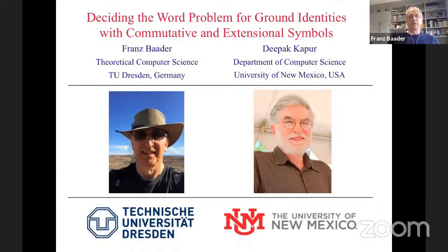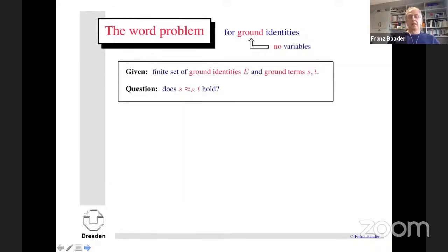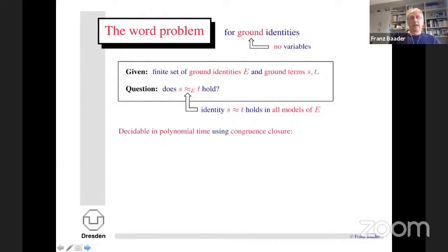Let me first explain what the word problem for ground identities is — it's a very old problem. Ground identities are equations between terms that contain no variables. The word problem says: given a finite set of ground identities and two ground terms S and T, is S equal to T modulo this theory? Semantically, S equal T must hold in all models of E. This problem is decidable in polynomial time, and one approach is congruence closure.